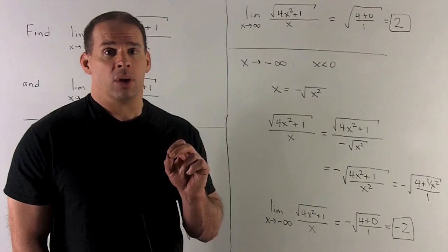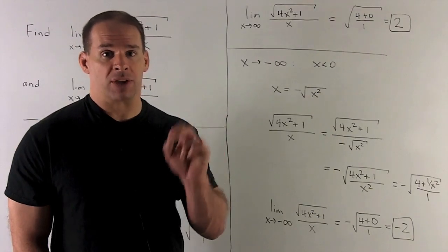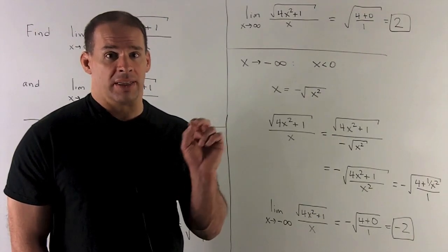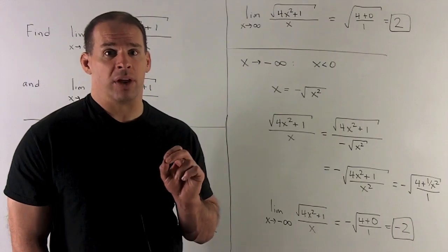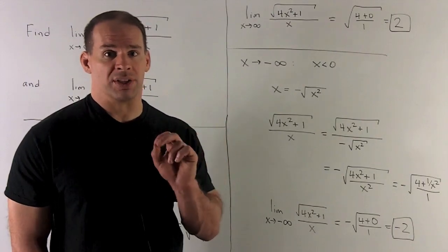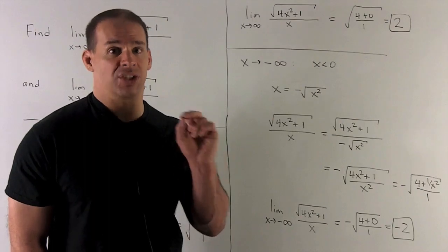We take our limit. We'll have 4 plus 1 over x squared. When I take the limit, the 1 over x squared goes to 0. It's going to be left with minus square root of 4 plus 0 or minus 2.